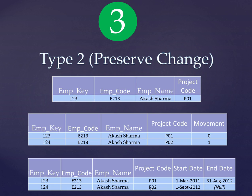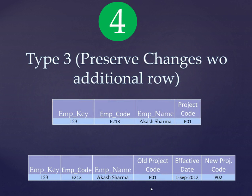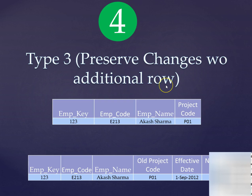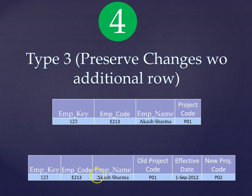Now let's move on to Type 3, or SCD 3, where we preserve the change but without an additional row. In this case you just have one row with the old project code P01, the new project code P02, and the effective date of starting the new project. With the effective date you can identify the last date of the old project. These are the three main recommendations; generally we don't move beyond SCD 3.